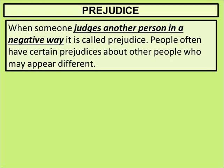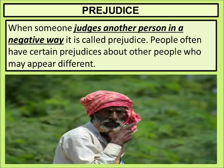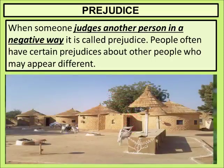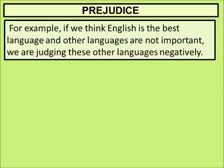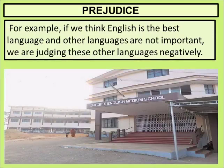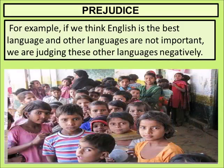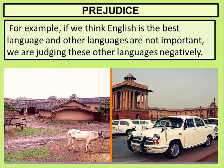People often have certain prejudices about other people who may appear different. For example, if we think English is the best language and other languages are not important, we are judging those other languages negatively. There is one village in Uttar Pradesh that has produced 53 IAS officers — each household of this village has a child who became an IAS officer. So just thinking that people of villages are very backward is prejudice.